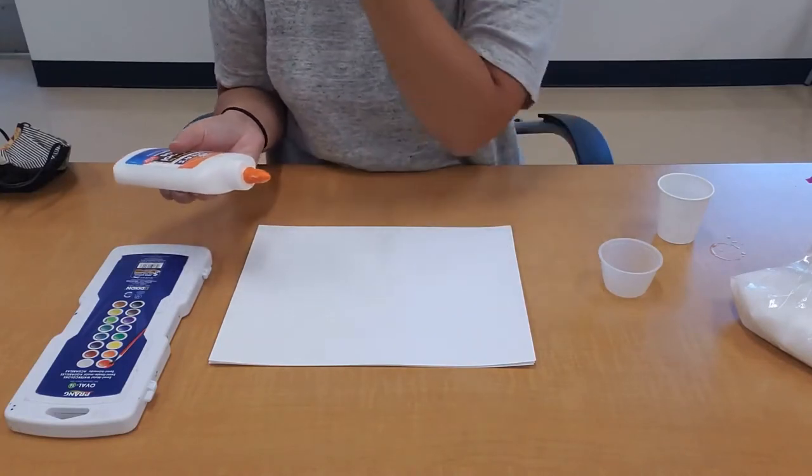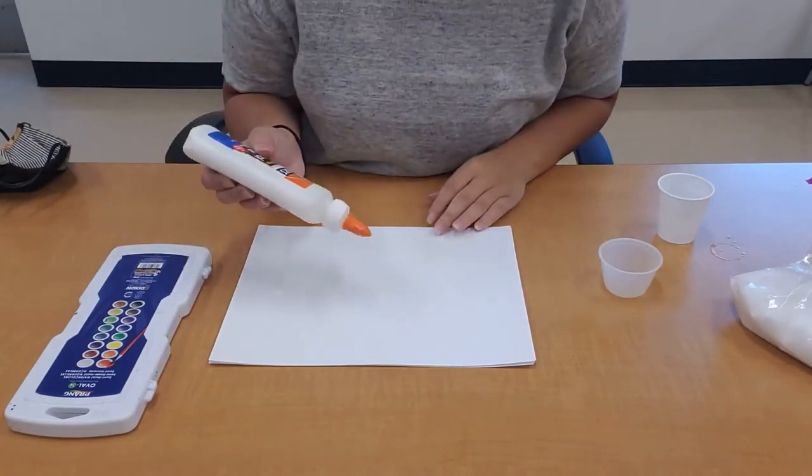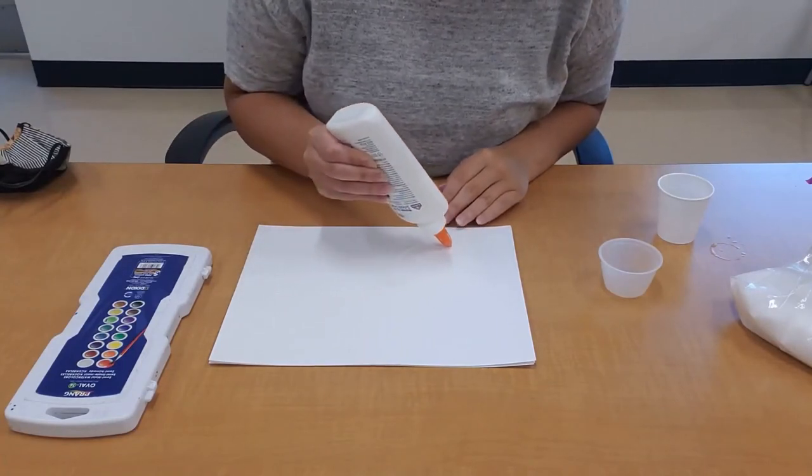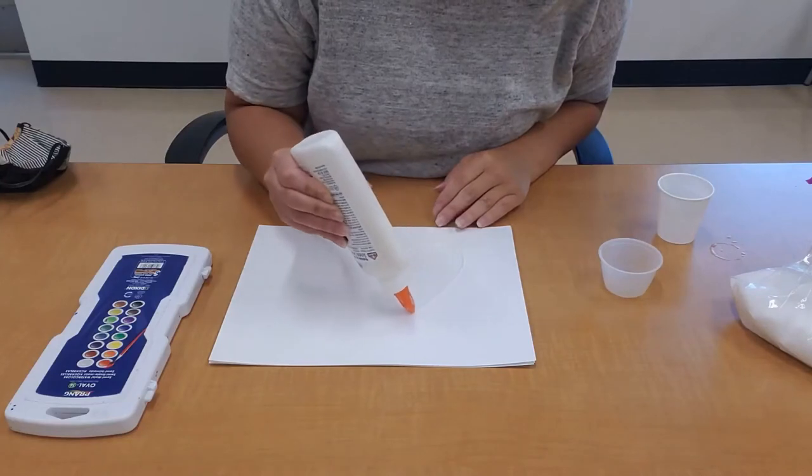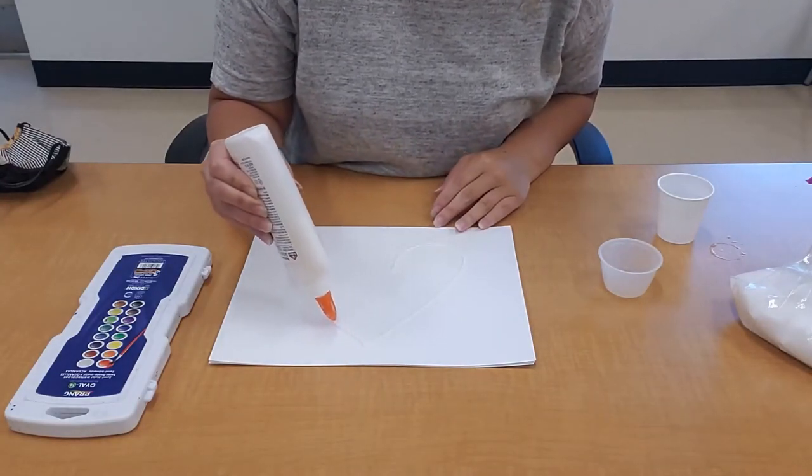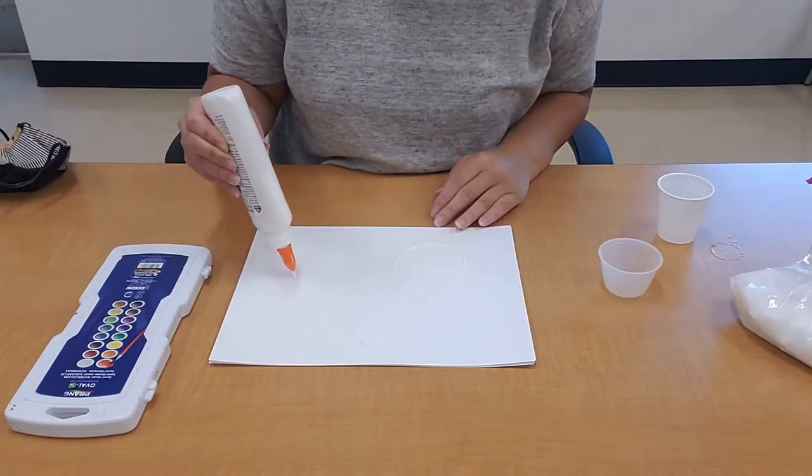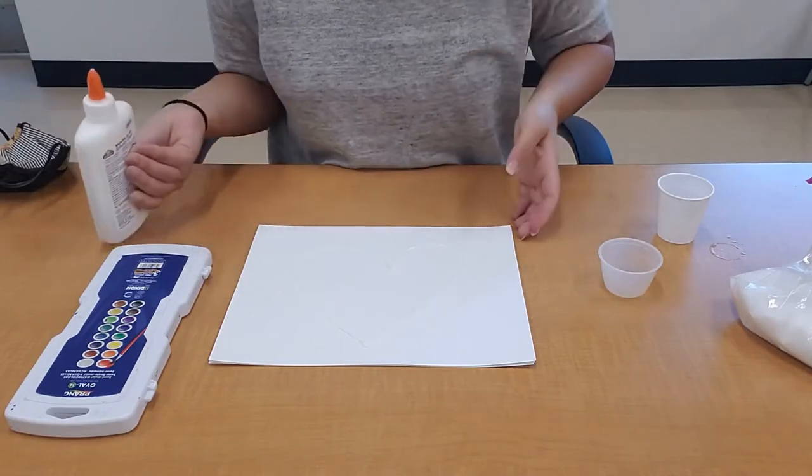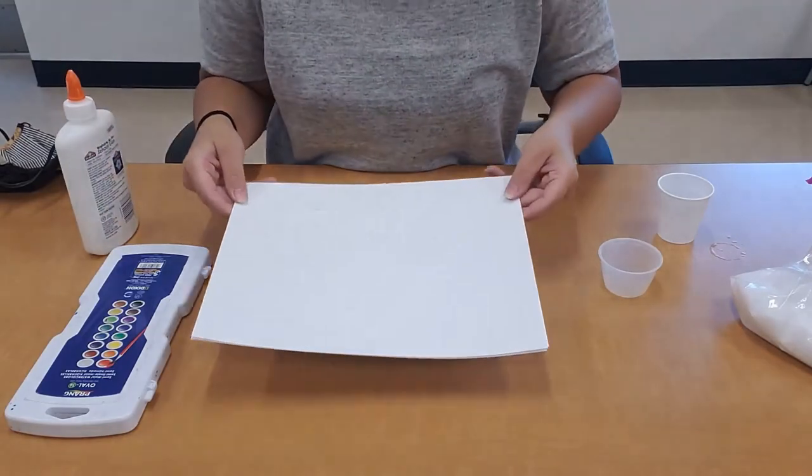All right, so I'm going to make a heart and I want to make a nice line with my glue. So if I bring it closer, you can see that I drew a heart with my glue.